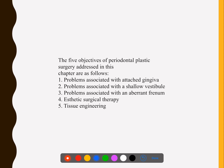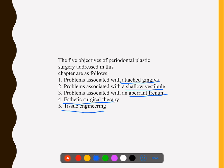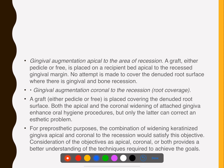There are mainly five objectives: number one, attached gingiva; number two, shallow vestibule; number three, aberrant frenum; number four, aesthetic surgical therapy; and number five, tissue engineering. Coming to how you treat it — gingival augmentation applies to the area of recession, meaning increasing the width of attached gingiva.